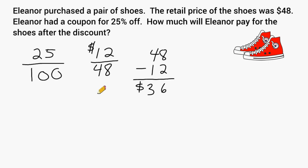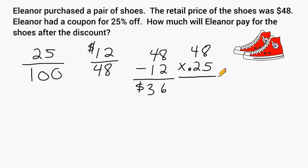Another way that we can approach this problem is by taking our total of $48 and multiplying it by 25% written as a decimal, which would be 25 written in the hundredths place. So let's go ahead and multiply 5 times 48. 5 times 8 is 40, we carry the 4, 5 times 4 is 20, plus 4 more is 24. And then we have to multiply 2 by 48, which is 96.